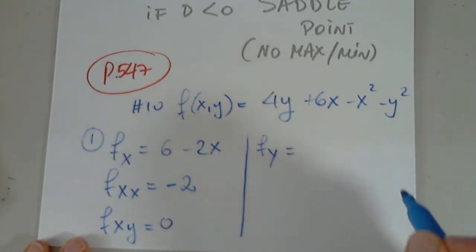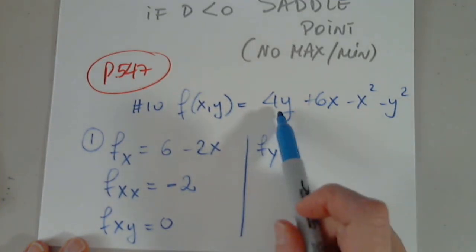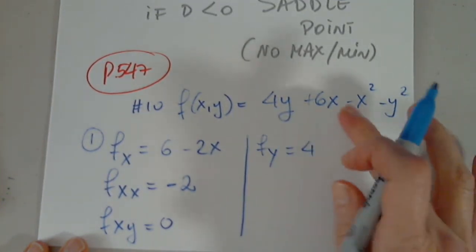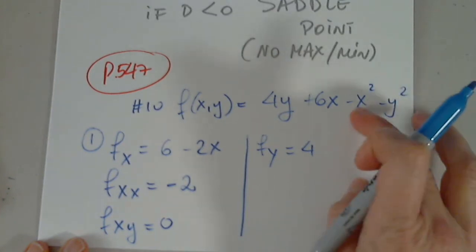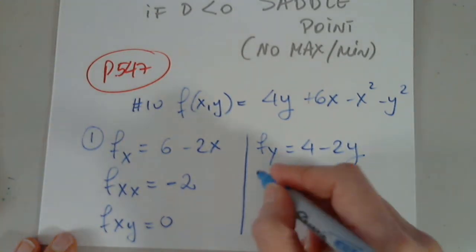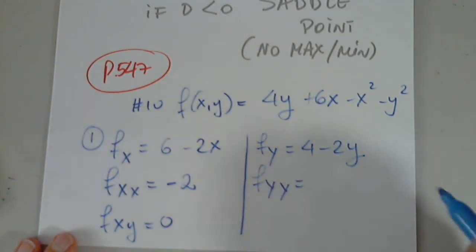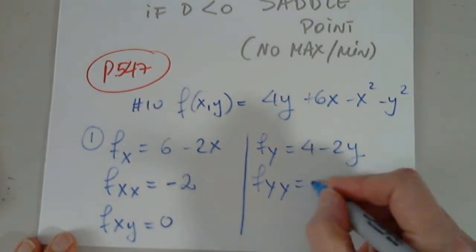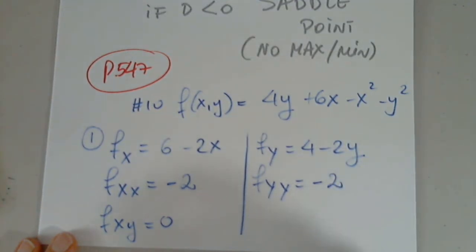Now, fy. x is fixed. When I differentiate this, I get 4. When I differentiate this, I get 0. When I differentiate this, I get 0. When I differentiate this, I get negative 2y. When I differentiate this with respect to y, I get negative 2.